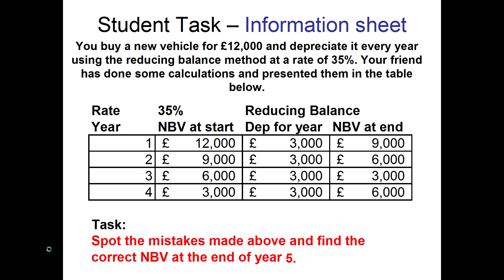So this is a task that I set, and there are three mistakes in here somewhere. I told you to try and jot down what you think each mistake is. Also try and find the NBV at the end of year five as well.